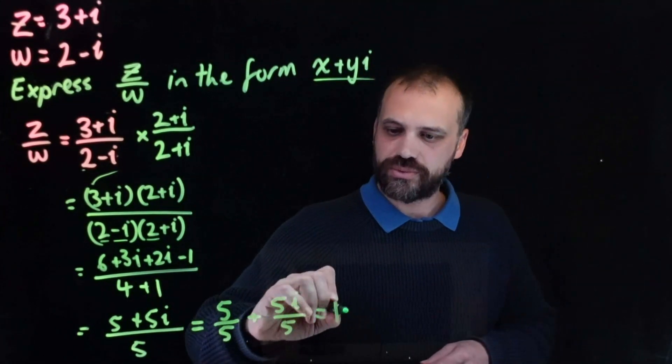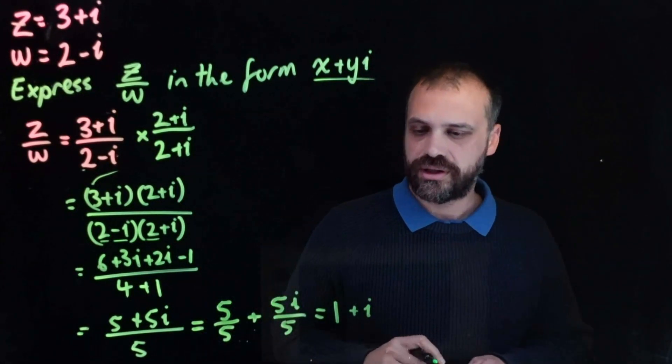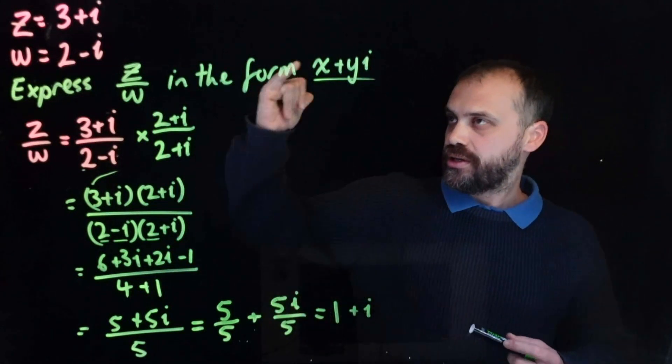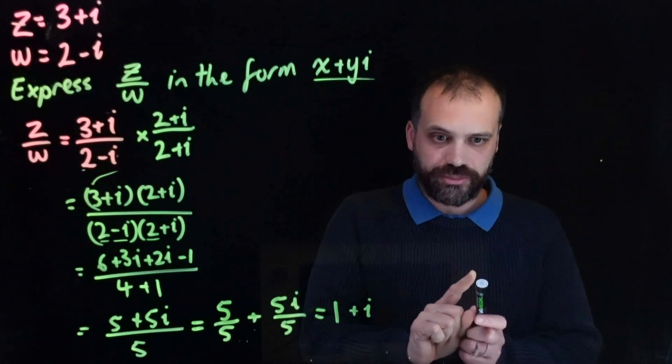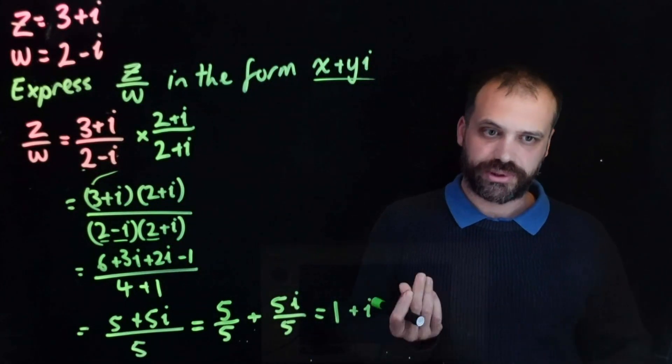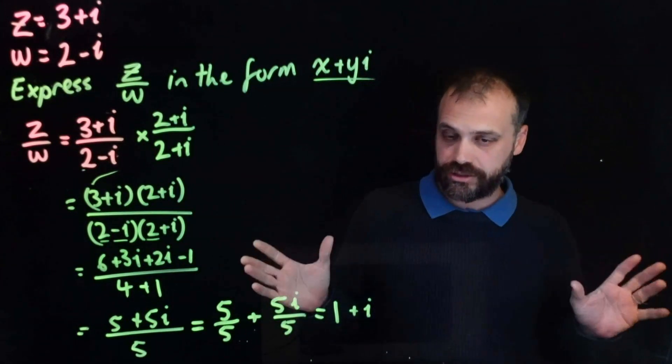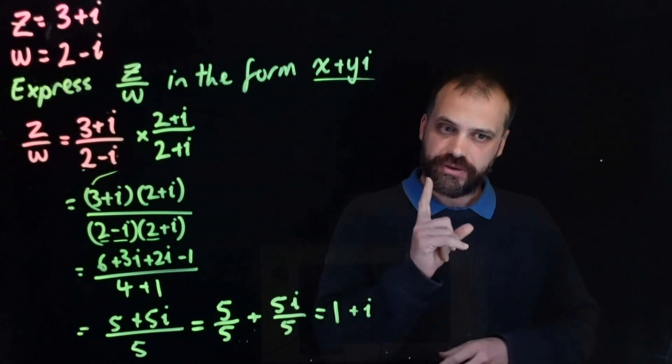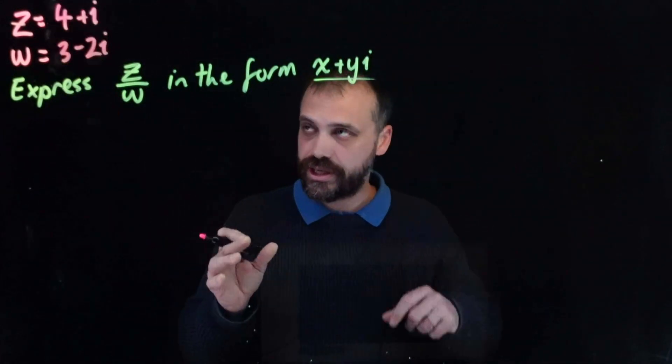5 over 5 is 1, and 5i over 5 is i. So 3 plus i divided by 2 minus i can be expressed as the complex number 1 plus i. Now, if you think you've got that nailed, you can stop the video here and run away and start doing some questions. If you want to see me do one more example, that's what I'm going to do. So here we go with example 2.